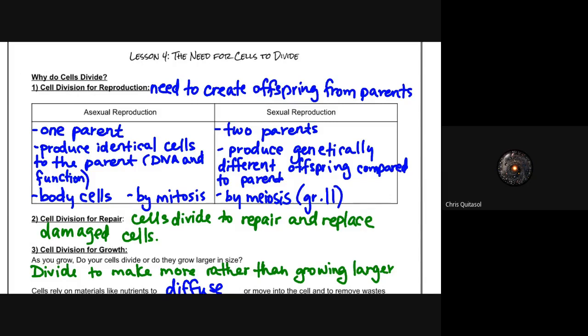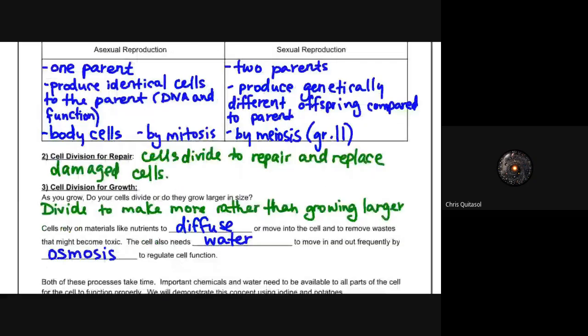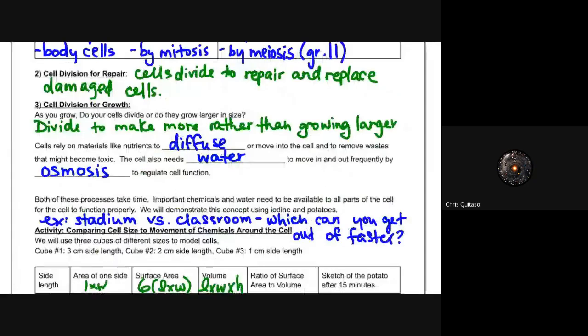The second reason cells divide is to repair and replace those damaged cells. Anytime you get a cut, scrape, or whatever on your skin, the cells go through mitosis and the cells around it that were not damaged divide to fill that gap so to speak, to heal the wound.